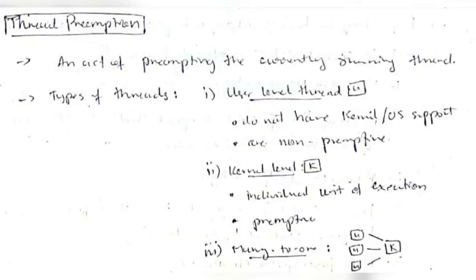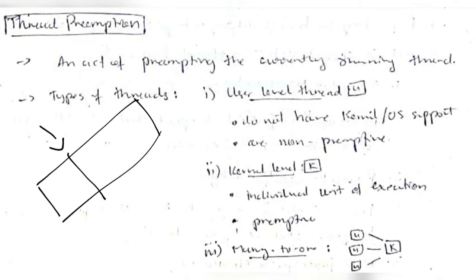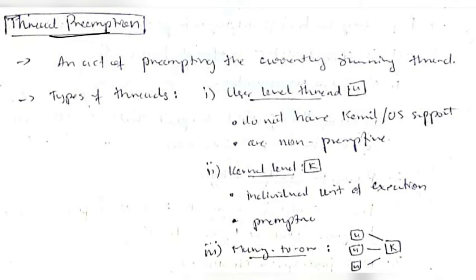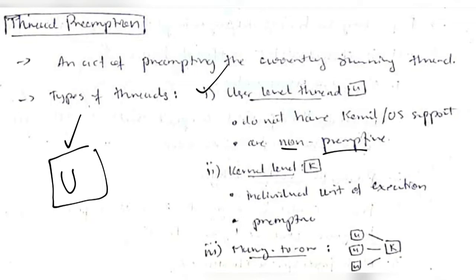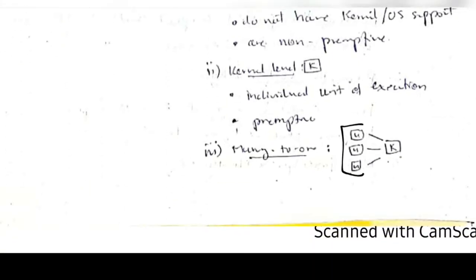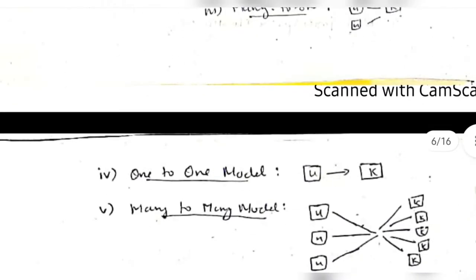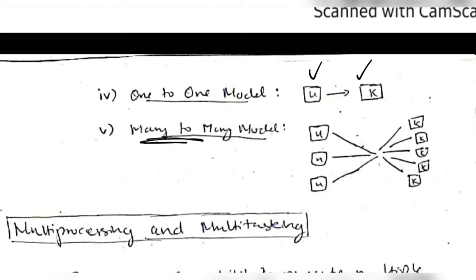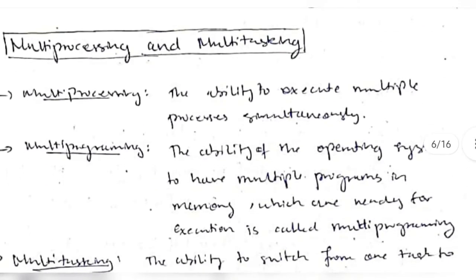Thread preemption means a process performing its task can be stopped at any point and another process can execute — this is preemption. If it happens with a thread, it's thread preemption. User-level threads perform user applications and cannot be preempted — they must complete fully. Kernel-level threads are preemptive because multiple tasks must be performed simultaneously. Thread models include many-to-one (many user threads to one kernel thread), one-to-one, and many-to-many.